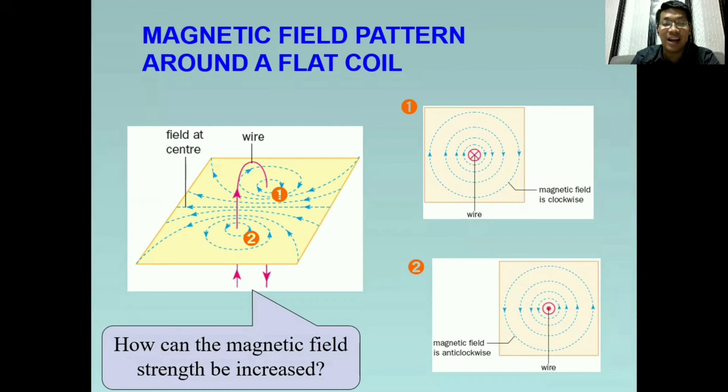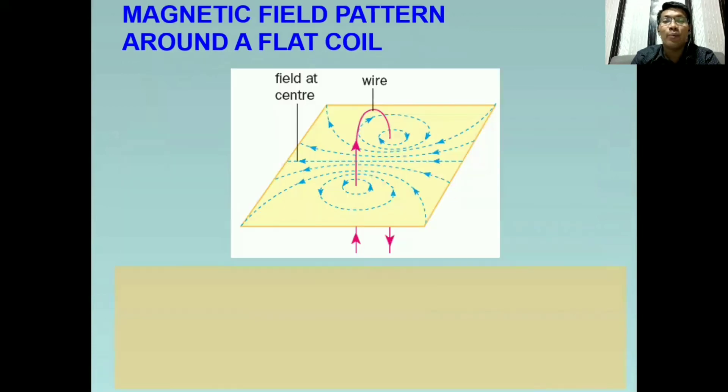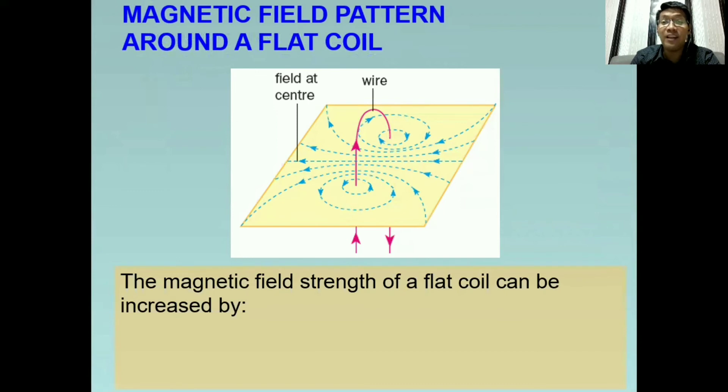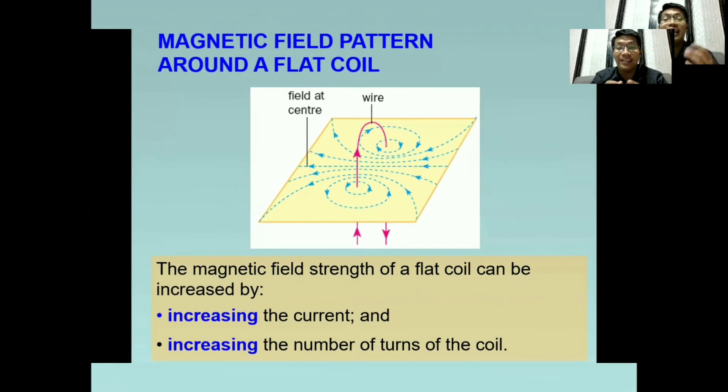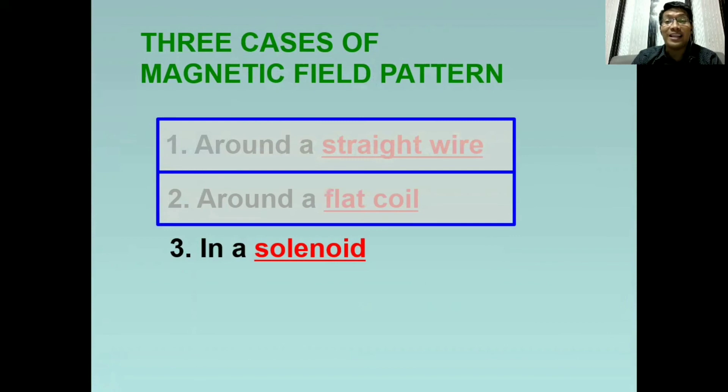The question is, how can the magnetic field strength be increased? We have two ways. The magnetic field strength of a flat coil can be increased by, first, increasing the current. So tataasan natin ang kuryente or dadamihan natin ang kuryente na dumadaloy sa wire na ito. The second one is, we add or increase the number of turns of the coil. Pag mas maraming turn ang coil, ibig sabihin, mas lumalakas ang magnetic field. And that is for the flat coil.